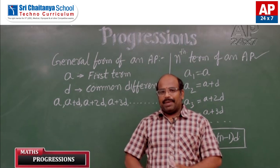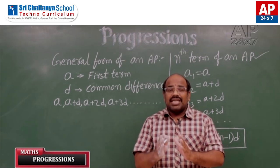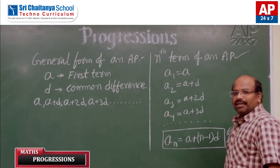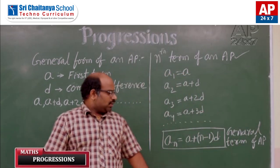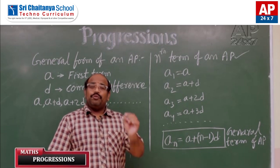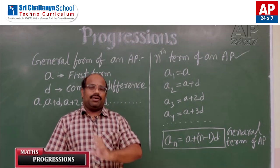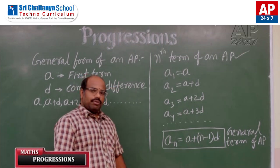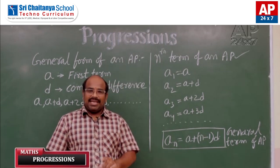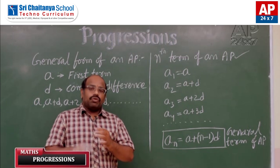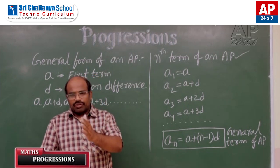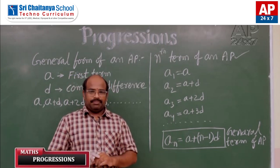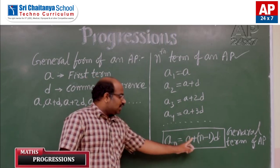This nth term of an AP is also called the general term of an AP. The benefit of this general term is that we can directly calculate any required term without calculating all previous terms. For example, we can directly calculate the 100th term of an AP without knowing the 2nd, 3rd, 4th, or 99th term.